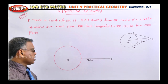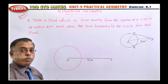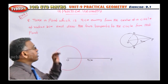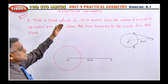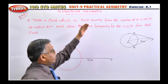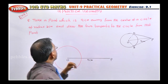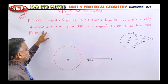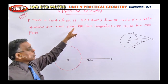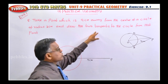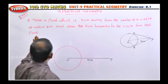Let's listen to the third model. This is also a very easy but important model. Take a point which is 9 centimeters away from the center of a circle of radius 3 centimeters and draw the two tangents to the circle from that point.